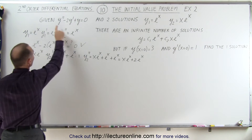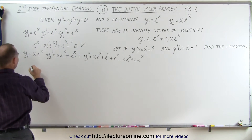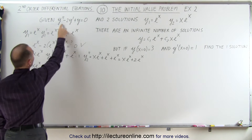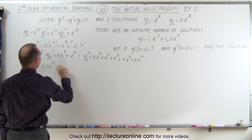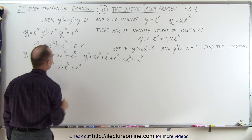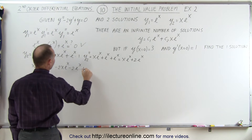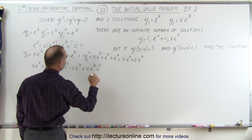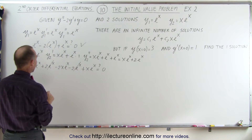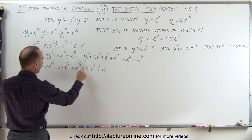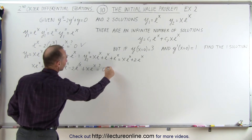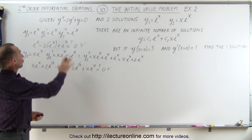When we plug those back into the original equation, we have y'' which gives x e to the x plus 2 e to the x, minus 2 times y' giving minus 2x e to the x minus 2 e to the x, plus y giving plus x e to the x. We want to know if that equals 0. The 2 e to the x and minus 2 e to the x cancel out, and x e to the x plus x e to the x minus 2x e to the x also cancels out, giving 0. So both solutions are indeed solutions to the differential equation.